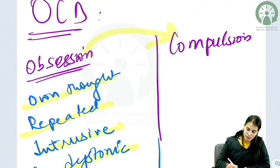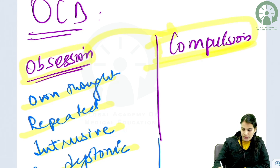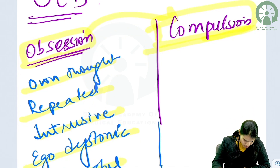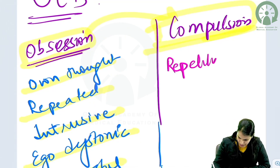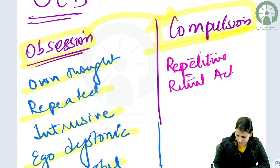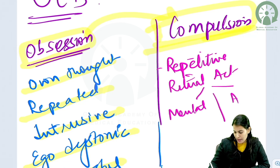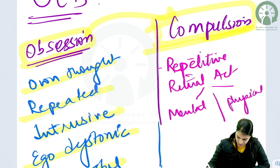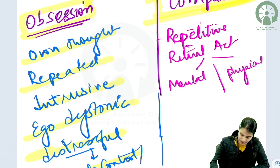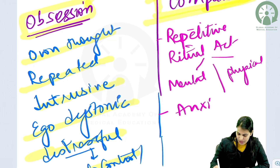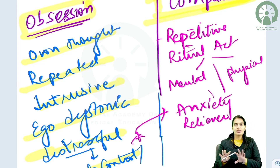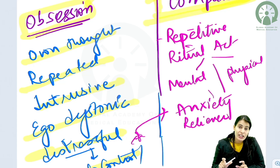To counter these obsessions, or at times even without the presence of obsessions, there are some compulsive behaviors. Compulsive behaviors are basically rituals — mental or physical acts that a person would do to counter the distress or anxiety produced by these repeated thoughts. They are repetitive rituals or acts, which can be both mental, that is by thinking and controlling, and physical, by physically acting out. They are anxiety-relieving, and since the obsessions were causing anxiety and distress, these acts are performed to relieve them. However, the relief is only transient — for a smaller duration.